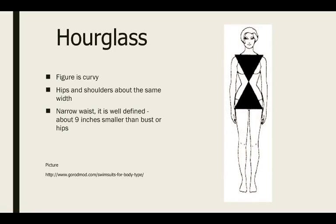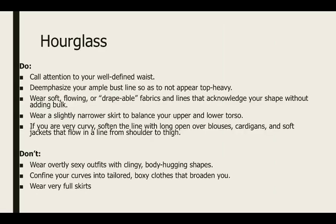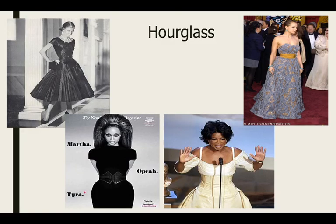Hourglass, your figure is typically curvier. You've got hips and shoulders are about the same width. Your waist is typically very narrow, and it's about nine inches smaller than either your chest or your hip measurement. Again, you can take a second to read through this if you are hourglass. Hourglass shape can be an illusion, just like in the 1950s with this new look. There's a lot of people who are hourglass shaped, and you can use fashion to your advantage to create this shape if you would like.